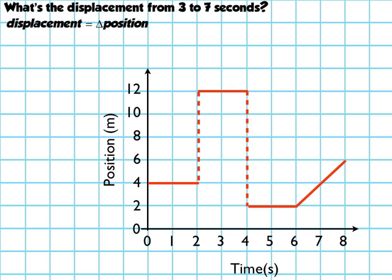Now displacement is defined as the change in position, so we write that as delta position. And the change in position is always final position minus initial position. Anytime we see the delta symbol, it always means final something minus initial something.